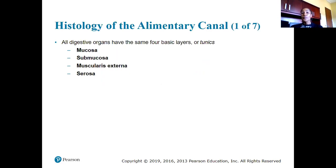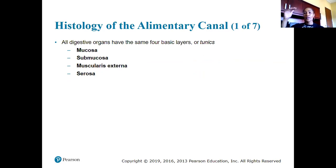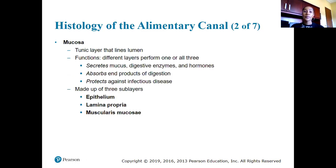Now let's talk about histology — the tissues that make up the alimentary canal. There are four major tissue layers from innermost to outermost: the mucosa, the submucosa, the muscularis externa, and the serosa.